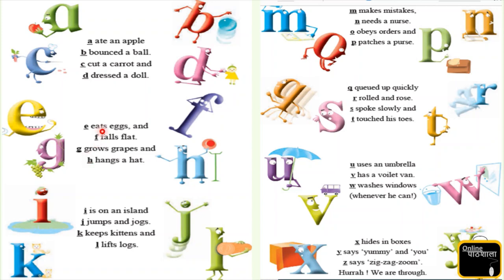E - eats an egg. And F - falls flat. G - grows grapes. And H - hangs a hat. I - it's an island. J - jumps and jogs. K - keeps kittens. And L - lifts a log.